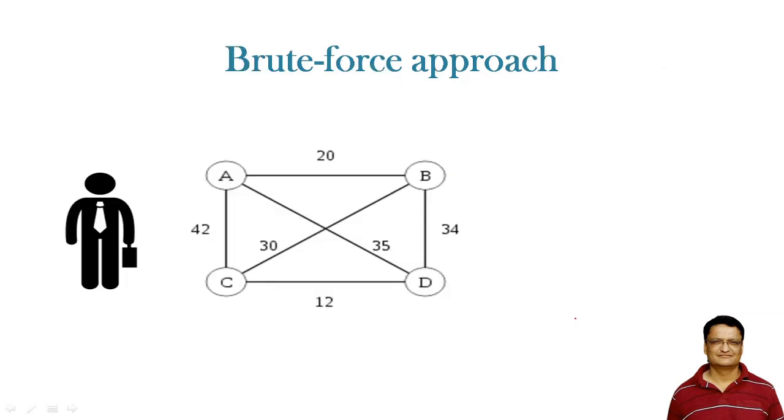So what is this brute force approach? We will calculate all the permutations and combinations which are possible with this problem. The first permutation is: he will start from city A, visit city B, then city C, then city D, and come back to city A. There could be other permutation options like A to B to D to C to A.